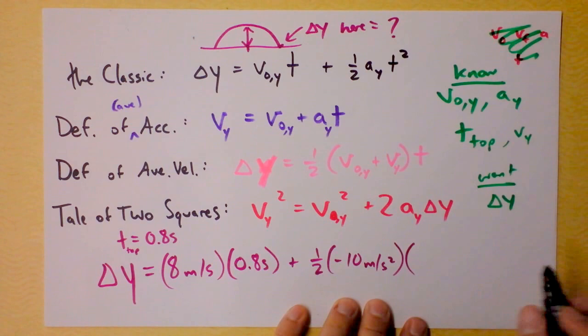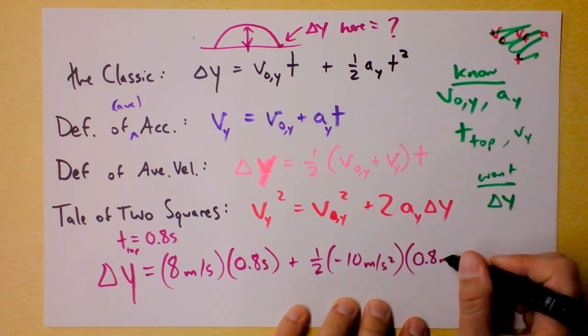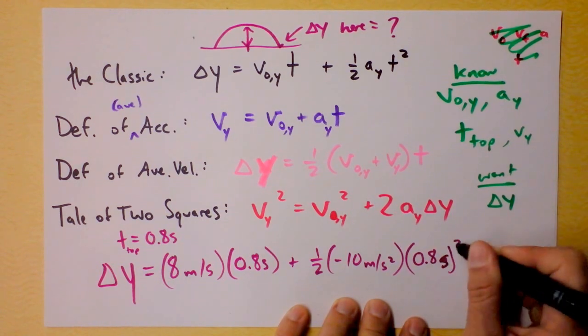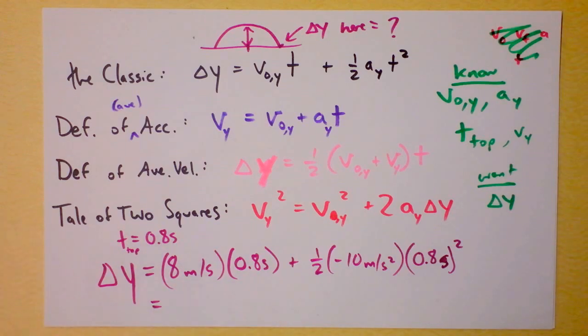And then I'm supposed to multiply by the time squared, which is 0.8 seconds squared. So we're going to have a whole bunch of 64s floating around here. Let's see what we can do.